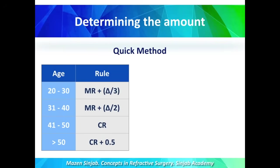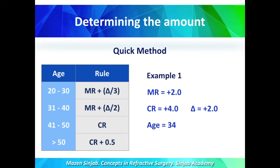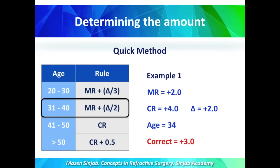Example number one: a patient has manifest refraction of plus 2 diopters and cycloplegic refraction of plus 4 diopters, so delta is plus 2. The patient's age is 34 years. We apply the rule for age 31-40: manifest refraction plus half of delta. So we are going to correct plus 3 diopters.